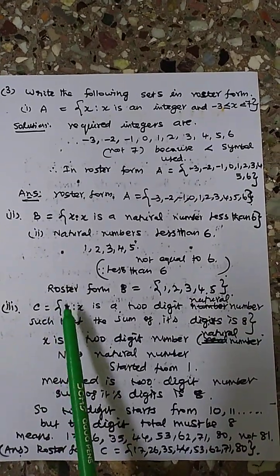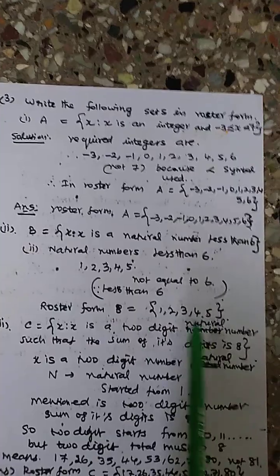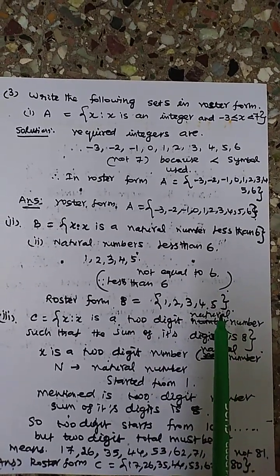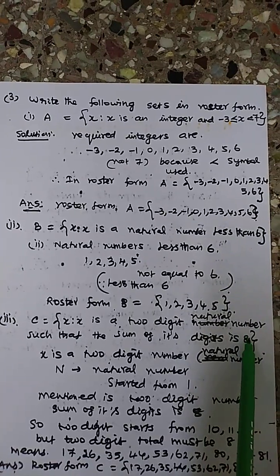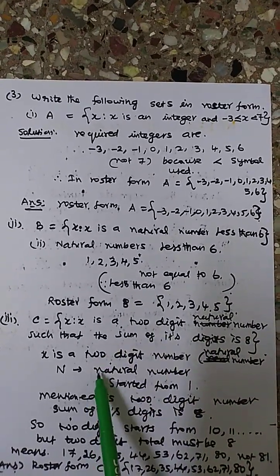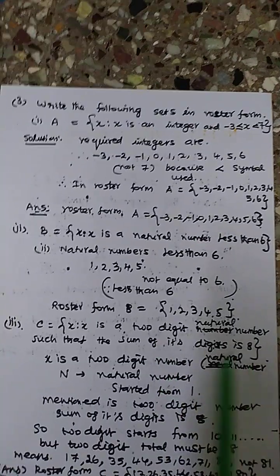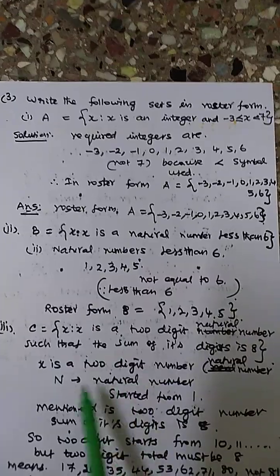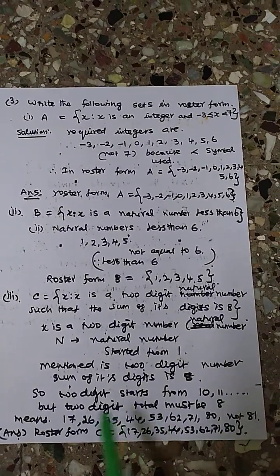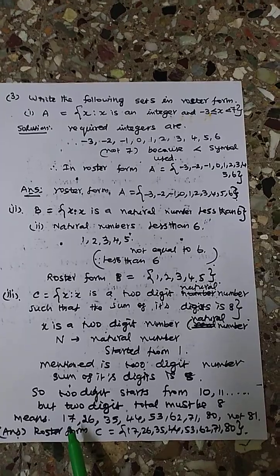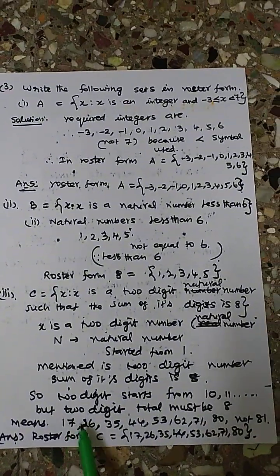Next sum: C = {X : X is a 2-digit natural number and the sum of its digits equals 8}. Two-digit natural numbers start from 10. For the digit sum to equal 8, we start from 17 — since 1+7=8. 16 gives 1+6=7, not 8. 18 gives 1+8=9, not 8. So 17 is the first valid number, and we continue finding numbers whose digits sum to 8.